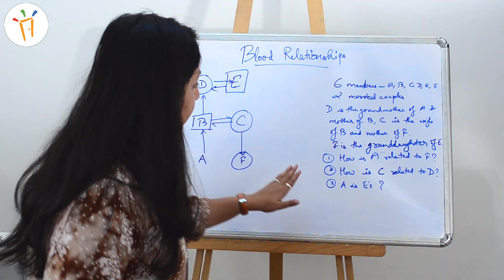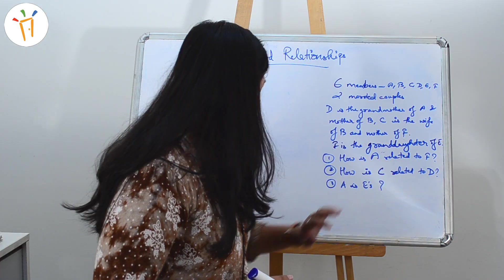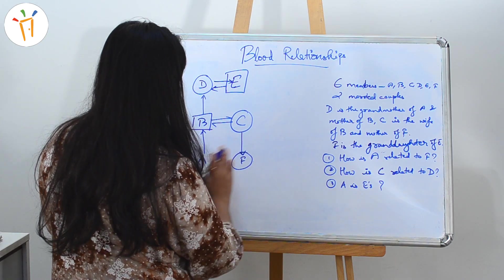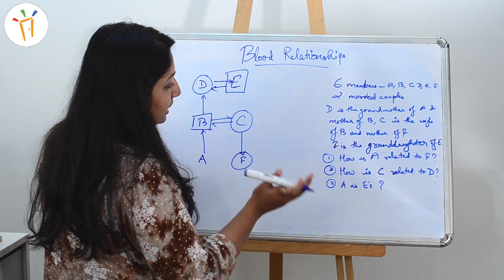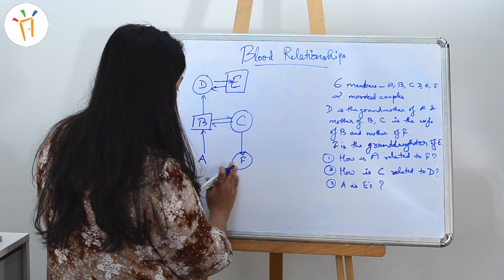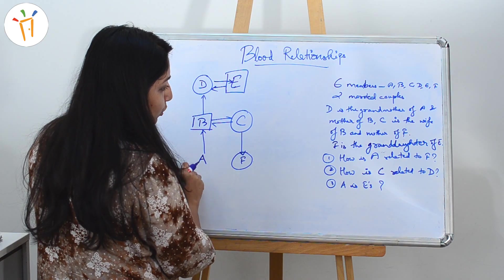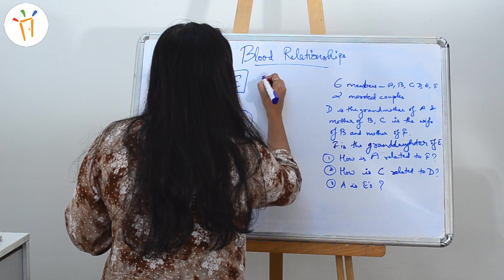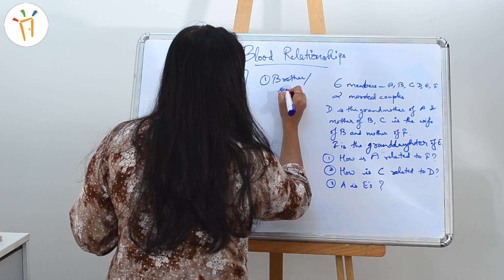Let's find the answers. First question: how is A related to F? A is here, but from these assumptions we were not able to find the gender of A. So the relationship of A to F — A will be the brother or sister of F, meaning A will be the sibling of F. Since we don't know the gender, the answer is brother or sister.